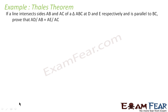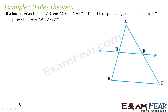The question says: if a line intersects side AB and AC of triangle ABC at D and E respectively, and DE is parallel to BC, prove that AD by AB is equal to AE by AC. Let's take this figure. This is the triangle ABC. The line intersects side AB at point D and AC at point E, and is parallel to BC — that is DE is parallel to BC. That means we can apply this theorem. We have to prove that AD by AB is equal to AE by AC.